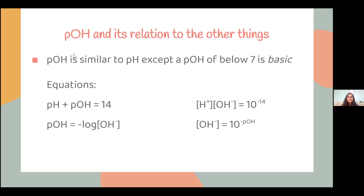pOH is like the opposite of pH. Anything below 7 with pOH is basic, which means it has a higher concentration of OH⁻ ions. These are the equations you need to convert back and forth between pH, pOH, hydroxide ion (OH⁻), and H⁺ ions.